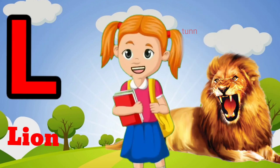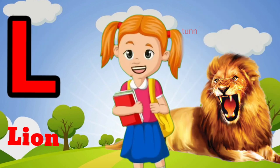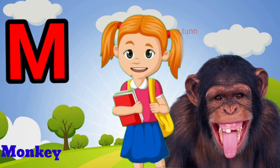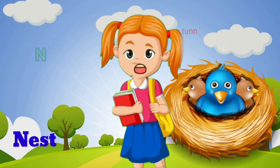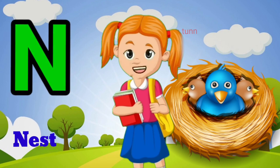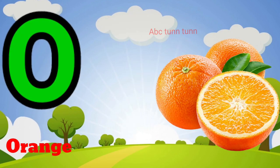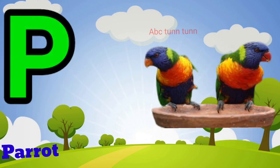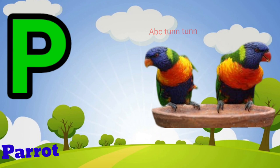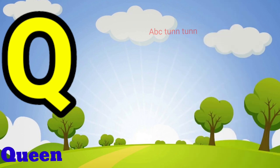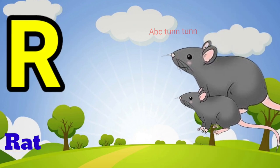L for lion. M for monkey. N for nest. O for orange. P for parrot. Q for queen. R for red.